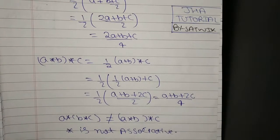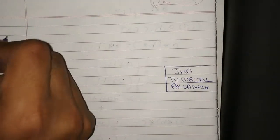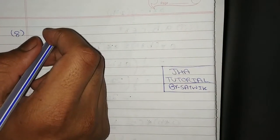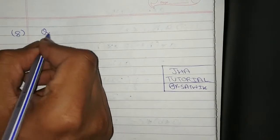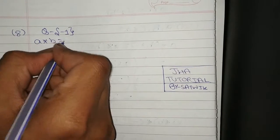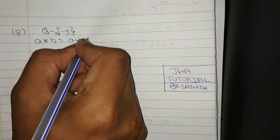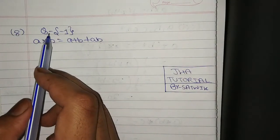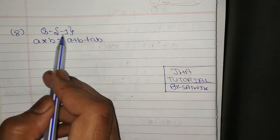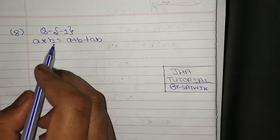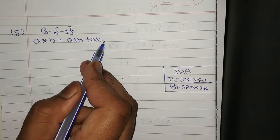Now let's see the 8th number question. Let Q be the set of all rational numbers. Define star on Q minus {-1} by a★b = a + b + ab. We need to show that star is a binary operation on Q\ {-1}, i.e., all rational numbers except minus 1.